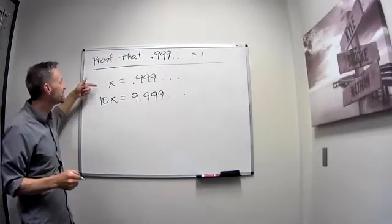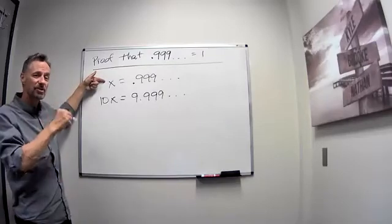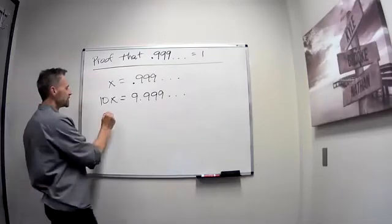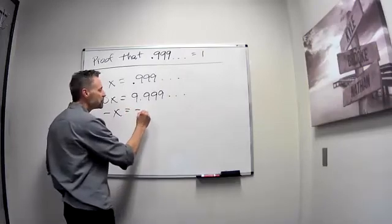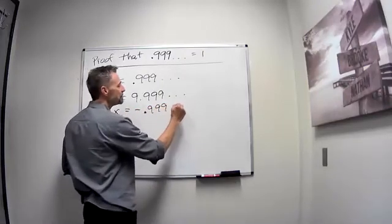I take this 10x and subtract away this original x equals 0.9 repeating. So let's go minus x equals minus 0.999 repeating.